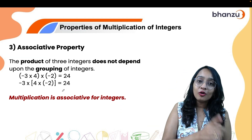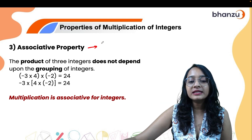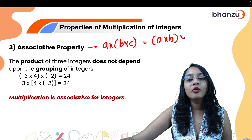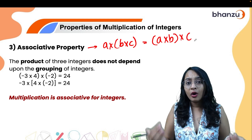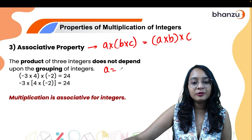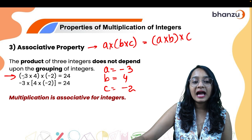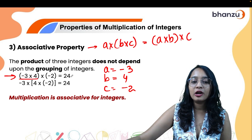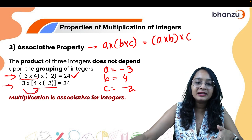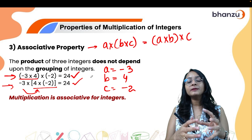Associative property is just an extension of commutative property involving more than two numbers. The order in which you multiply them should not matter. Taking a = minus 3, b = 4, and c = minus 2: multiplying a and b first then c gives plus 24; multiplying b and c first then a also gives plus 24. The answer remains the same.